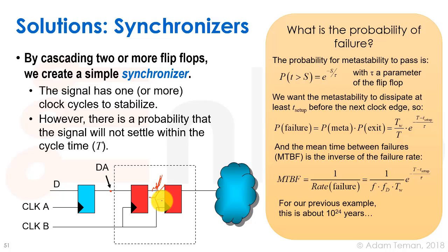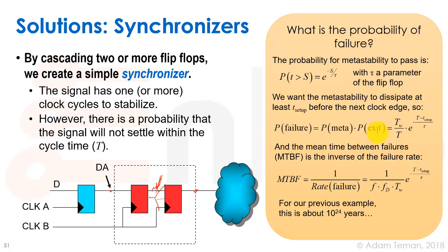The probability of metastability persisting is P(t > s) = e^(−s/τ), where τ is a parameter of the flip-flop, and we need the metastability to dissipate at least T_setup before the next clock edge. The failure rate is therefore the metastability rate times TW divided by the clock frequency, times e^((T − T_setup)/τ).